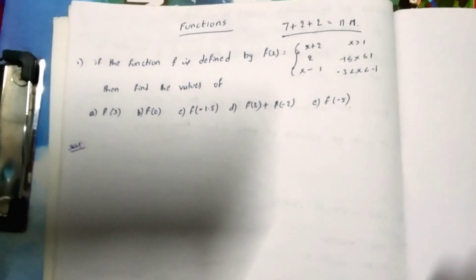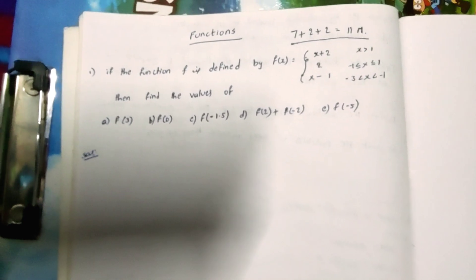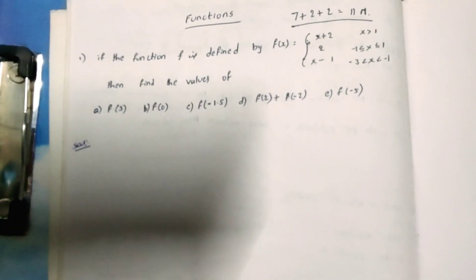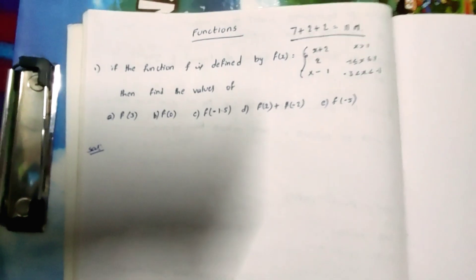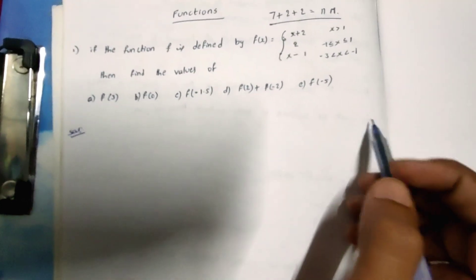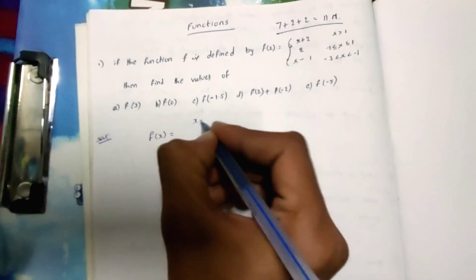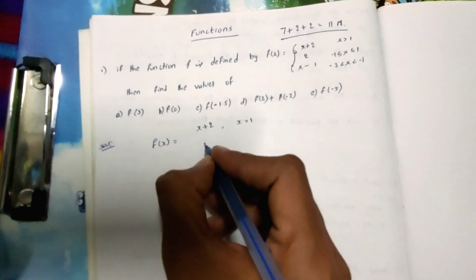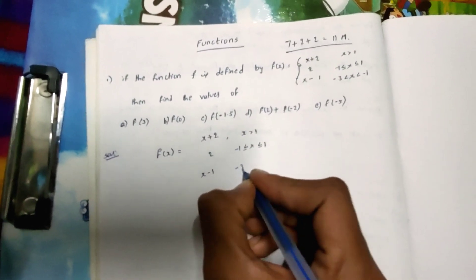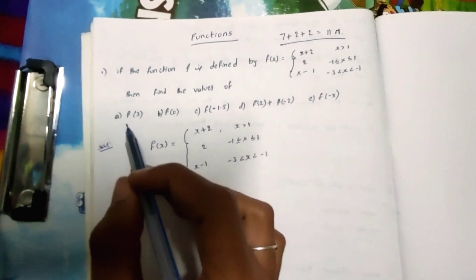We have rules here. The function is defined as: f of x equals x plus 2 when x is greater than 1; equals 2 when minus 1 is less than or equal to x less than or equal to 1; equals x minus 1 when minus 3 is less than or equal to x less than or equal to minus 1. If I find f of 3, I check which condition applies.